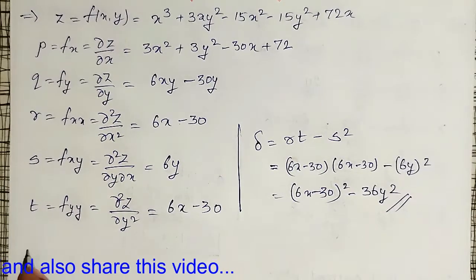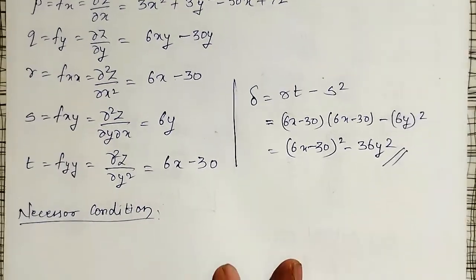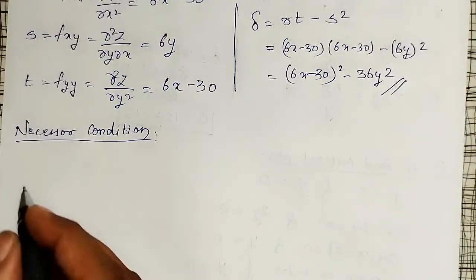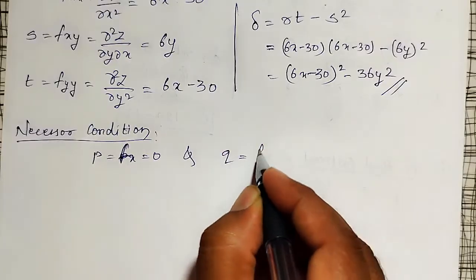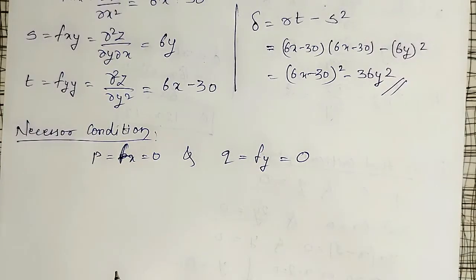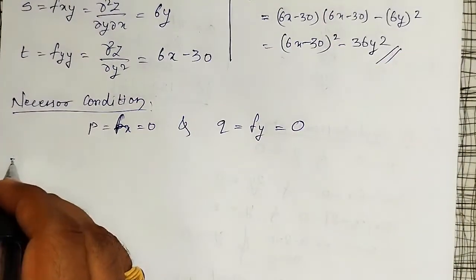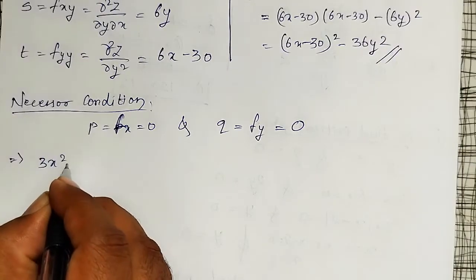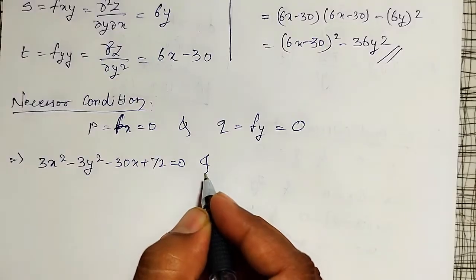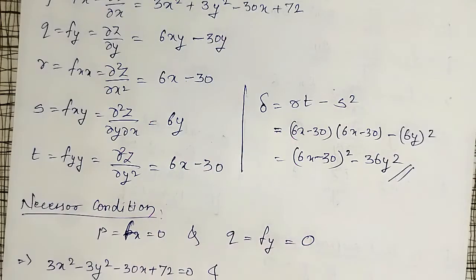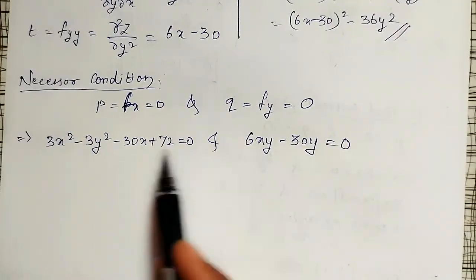Now I will apply the conditions one by one. The necessary condition to find a maximum or minimum point is p = 0 and q = 0. So setting p = fx = 0: 3x² + 3y² - 30x + 72 = 0. And setting q = fy = 0: 6xy - 30y = 0.